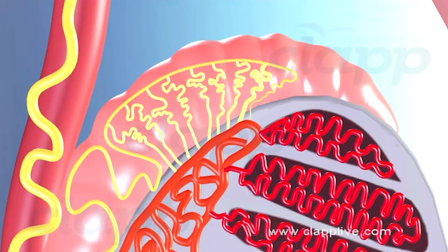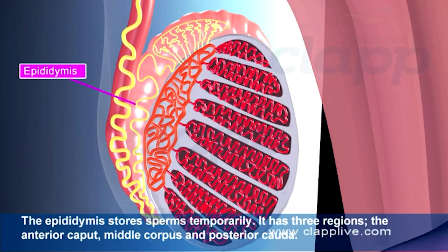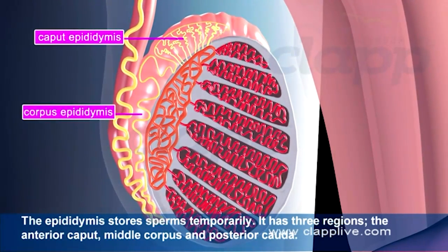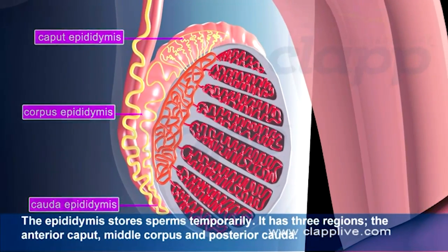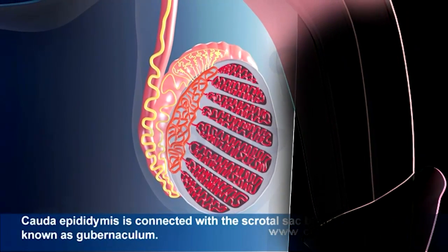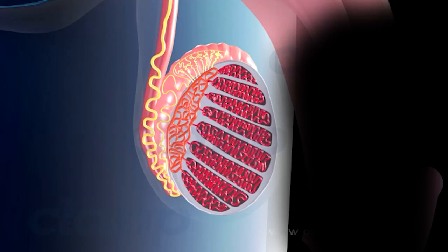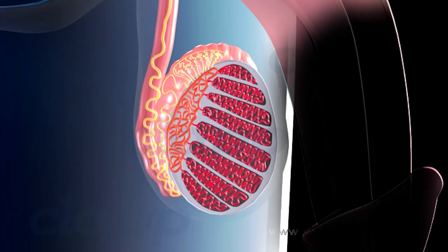The vasa efferentia form the initial part of the epididymis, and at some locations they bear cilia to help in sperm transport. The epididymis is a tightly coiled tube about 6 meters long, located on the posterior margin of each testis. It stores sperm temporarily and has three regions: the anterior caput, the middle corpus, and the posterior cauda. The cauda epididymis is connected with the scrotal sac by a cord known as the gubernaculum.